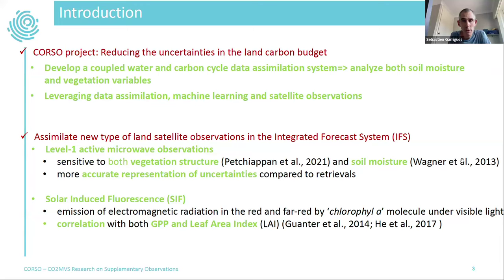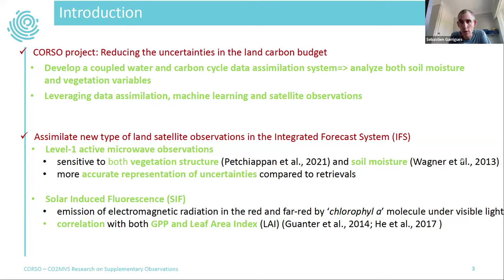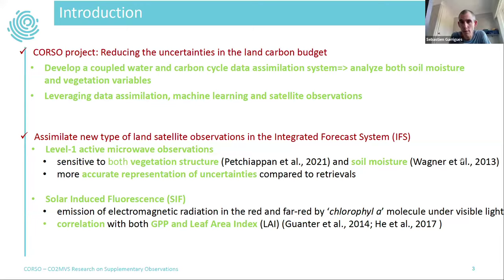This work is achieved in the context of the CORSO project. One objective is to reduce uncertainties in the global carbon budget, which are quite significant especially for estimation of gross primary production (GPP). At ECMWF, in the IFS we are currently assimilating only soil moisture, so we have no coupling with vegetation. The overall objective within this project is to develop a coupled water and carbon cycle data assimilation system and to analyze both soil moisture and vegetation variables in a consistent way.